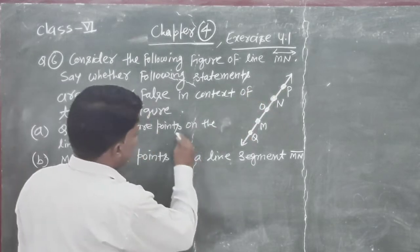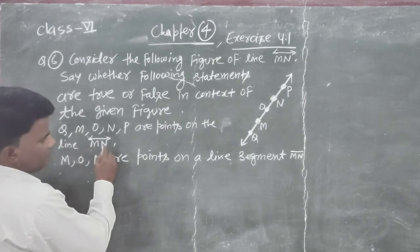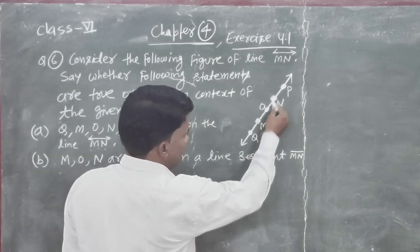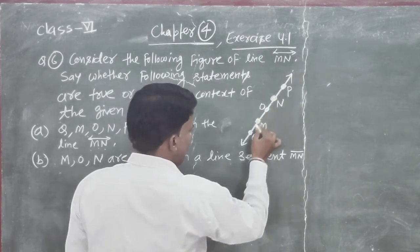We know that MN line. From MN joh line amarei paas hai, usko dono side haam aage extend kar sakte hai.